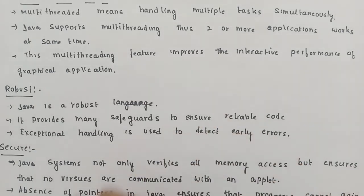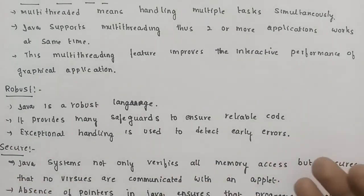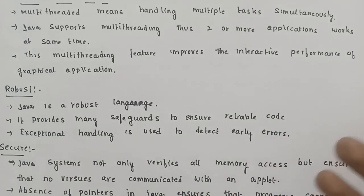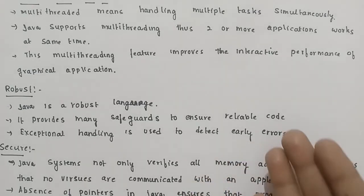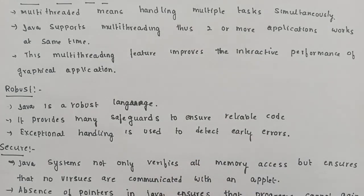Next: robust. Robust means the system is reliable and produces correct results. There are a lot of safeguards and safe techniques followed. There is exception handling. So the system has reliability in Java language.